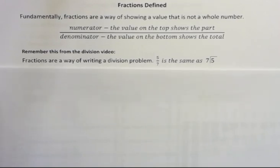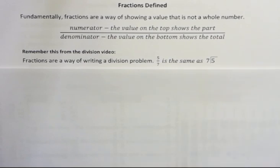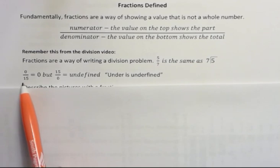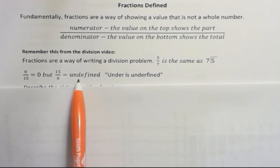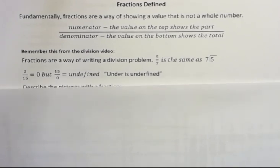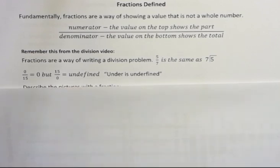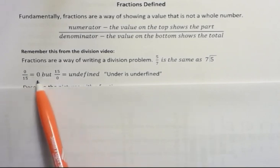Remember from the division video that fractions are a way of writing a division problem. 5 sevenths is the same as 5 divided by 7. And also remember, in a fraction, 0 divided by any number is 0, but any number divided by 0 is undefined. To remember that, you can think of under is undefined. If you put them into your calculator from the top down, 0 divided by 15 or 15 divided by 0, you will see that you get an error message when you try to divide by 0, but you get the answer of 0 in this case.